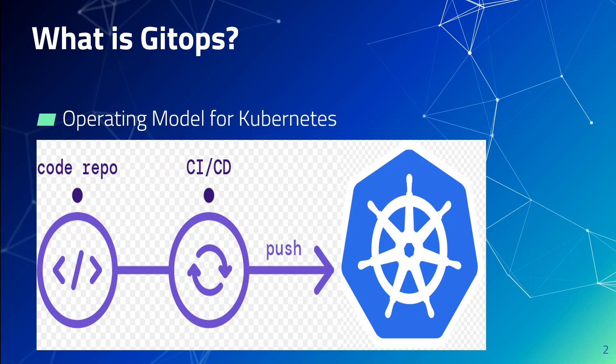At a very high level, if you look at this diagram, on the very left hand side we have a code repo or version control system in Git. As soon as changes are pushed to this code repository, a continuous loop in the CI/CD picks it up and pushes it to the Kubernetes cluster.